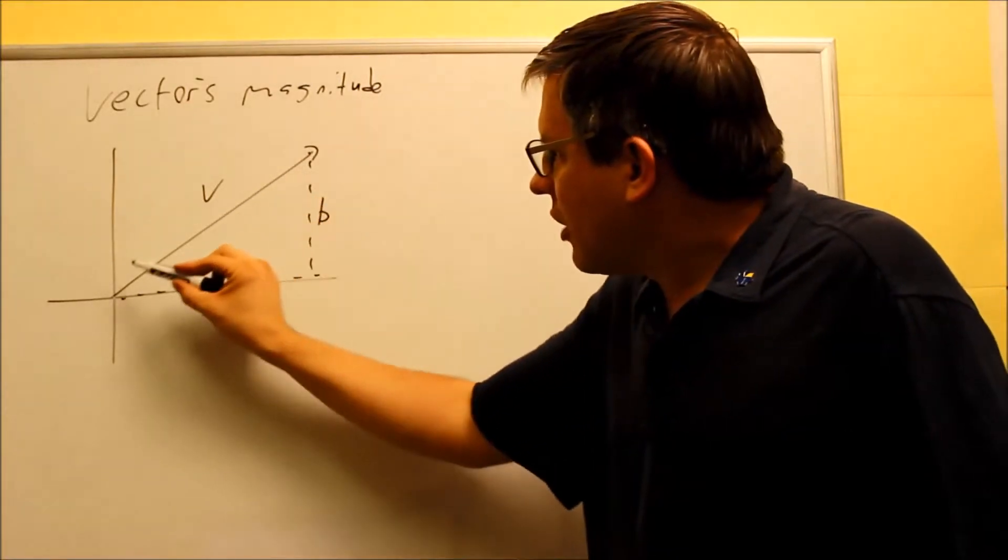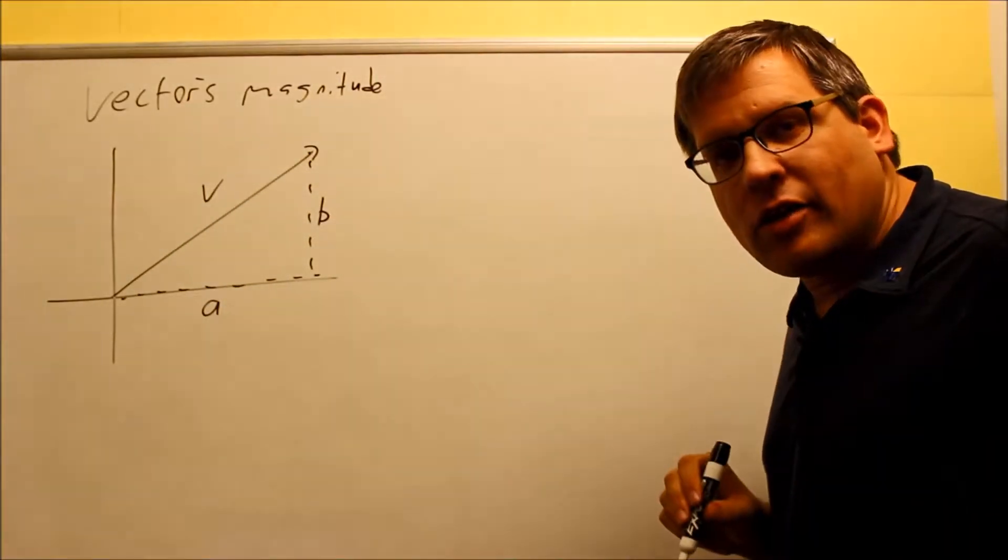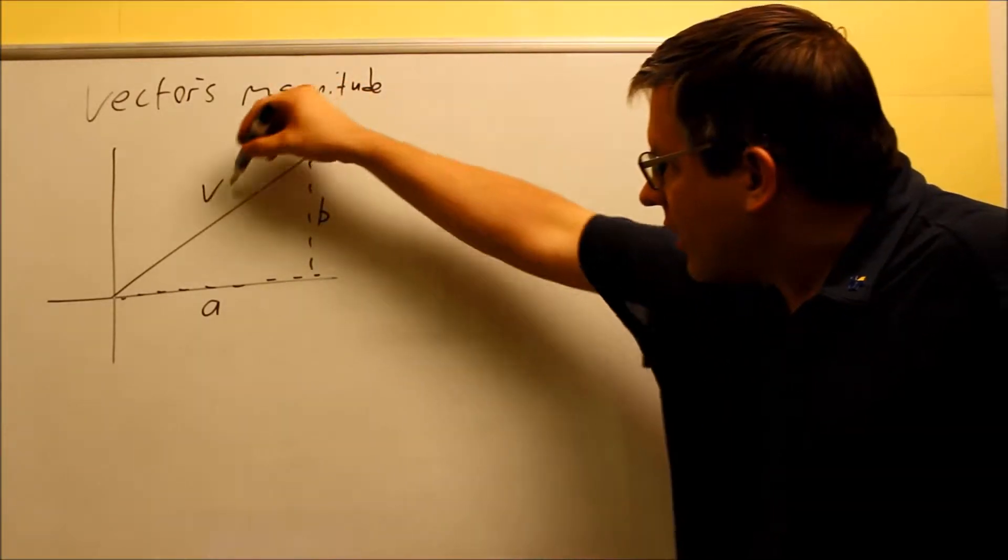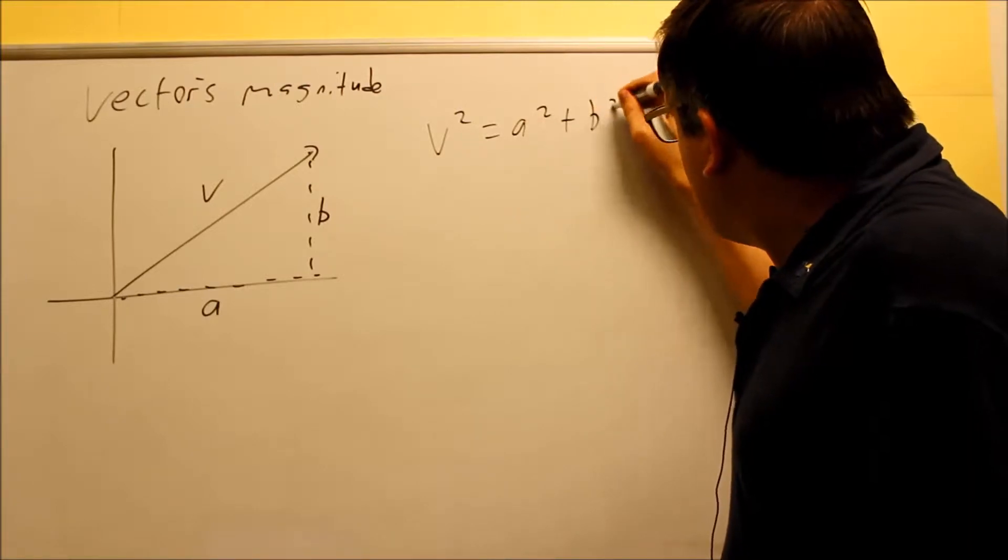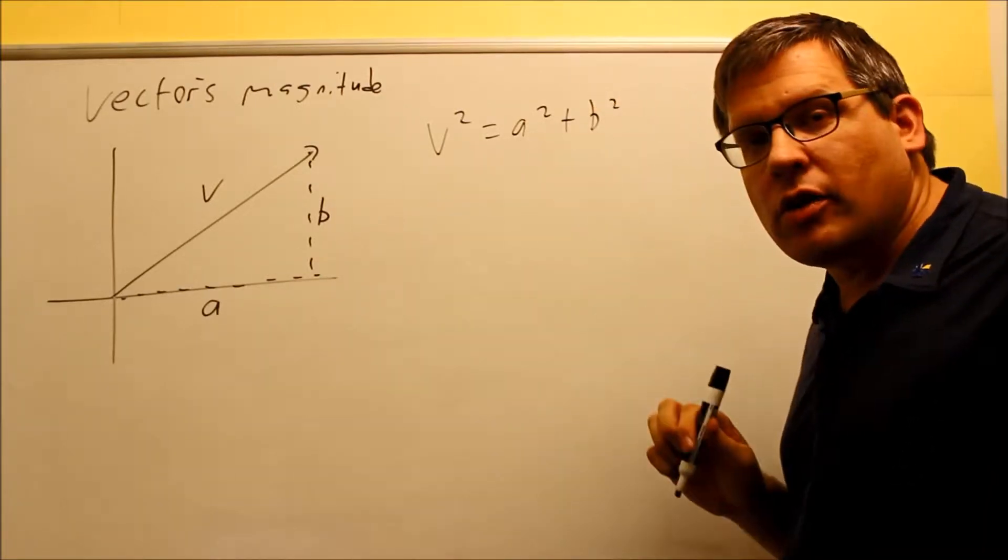If I want to find out how long this is, actually we can still use the Pythagorean Theorem in order to find out how long that side is. So I would have V² equals A² plus B², that's my Pythagorean Theorem.